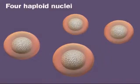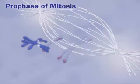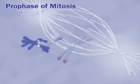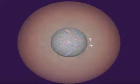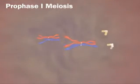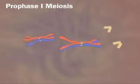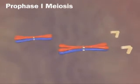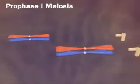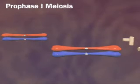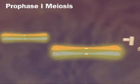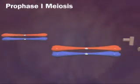A key difference between meiosis and mitosis comes very early in the first prophase. Mitotic chromosomes are independent of one another. But in prophase I of meiosis, homologous chromosomes synapse — they pair up tightly. This diploid nucleus has two pairs of homologous chromosomes, n equals 2 and 2n equals 4. Note that the pairs have synapsed.